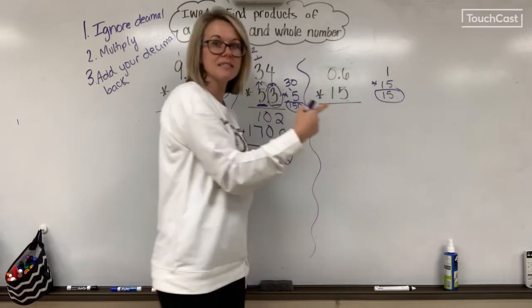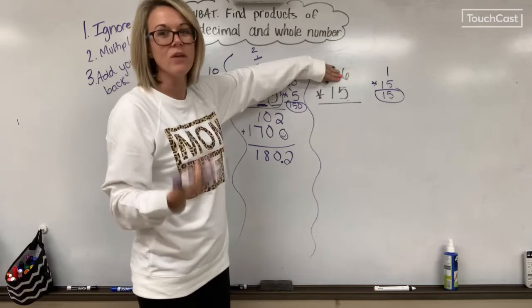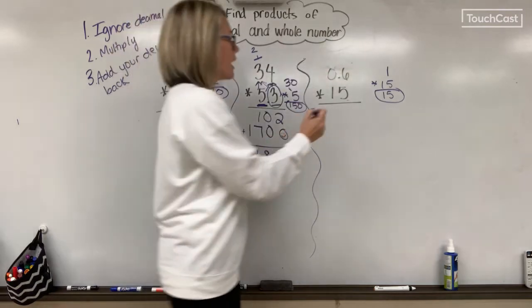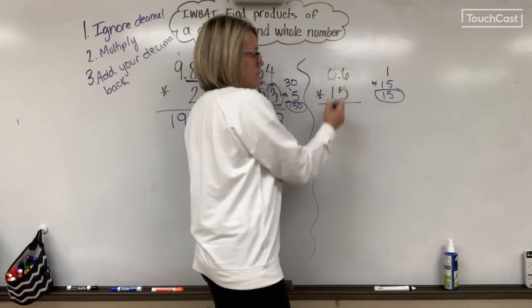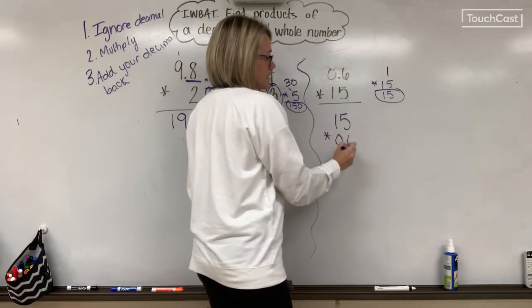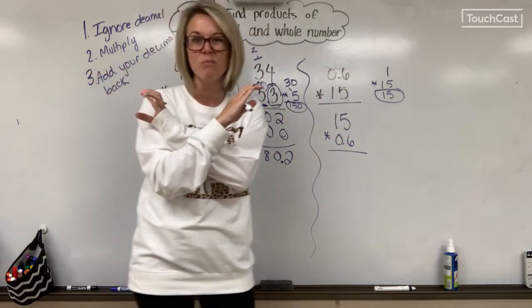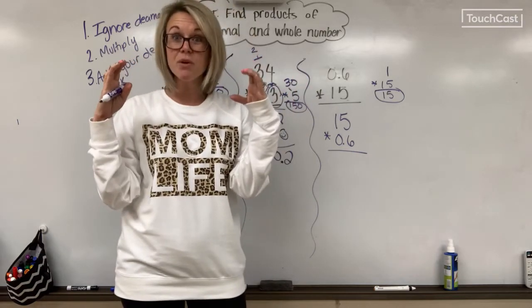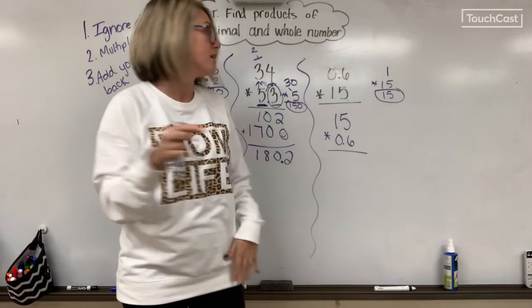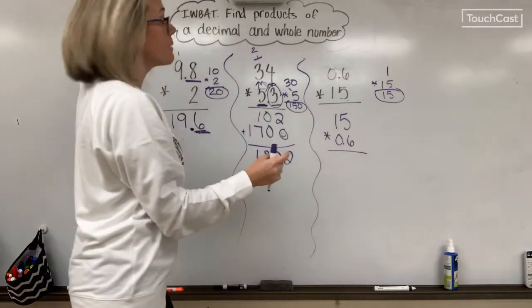When I go to multiply this, if I ignore this decimal, it means I'm ignoring the zero. I don't like having my larger factor on the bottom, so I'm going to rewrite this as 15 times 0.6, because that commutative property tells me I can switch my factors around and still get the same product. That commutative property says you can take two factors, switch them around, and it still equals the same thing.